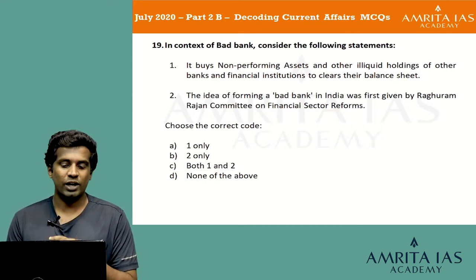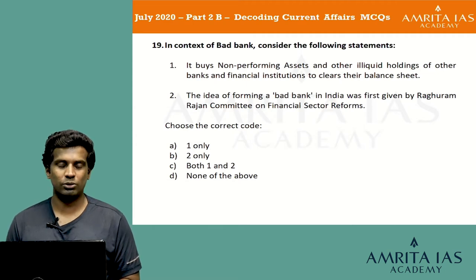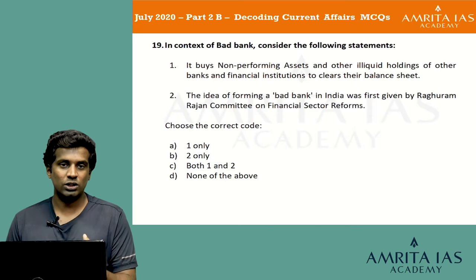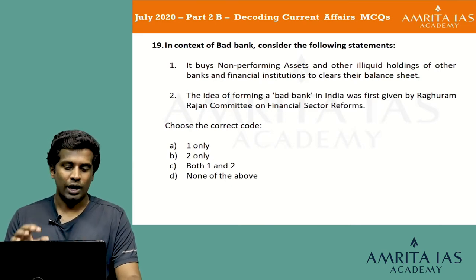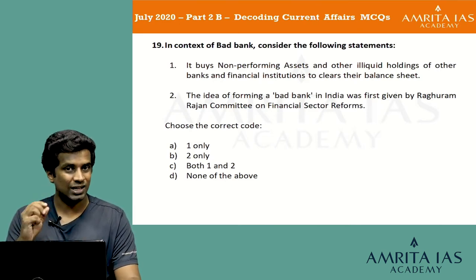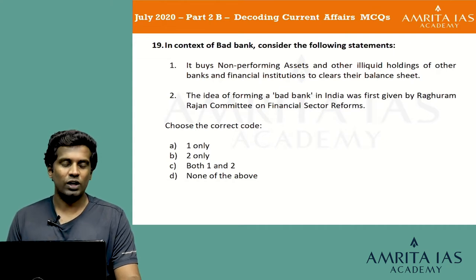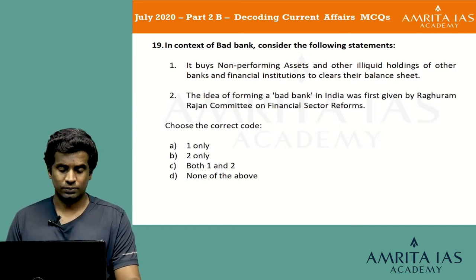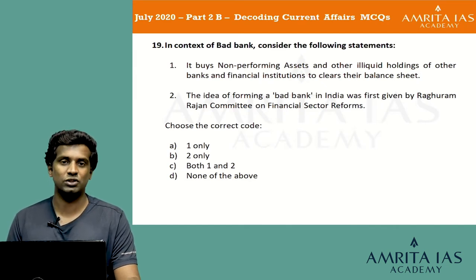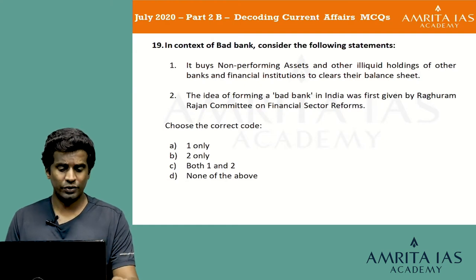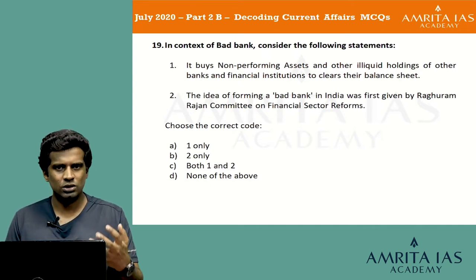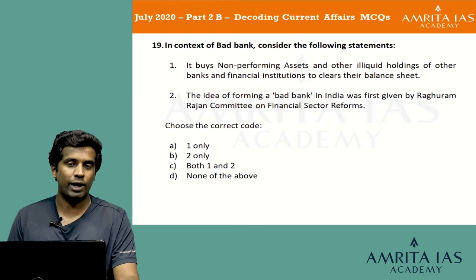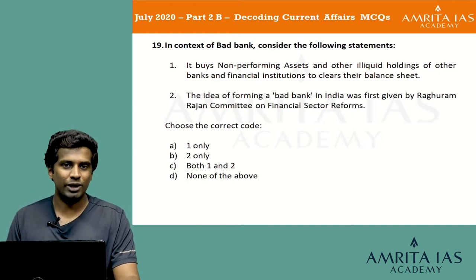The second statement — that the idea of forming a bad bank was first given by the Raghuram Rajan Committee on Financial Sector Reforms — is wrong, because Raghuram Rajan was actually against the formation of a bad bank in India. With statement 2 eliminated, we are left with option A (1 only) or option D (none of the above). The first statement — that a bad bank buys NPAs and illiquid holdings to clear balance sheets — is correct, so the answer is option A.